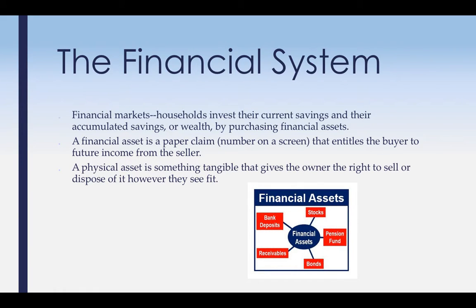A physical asset is something tangible that gives the owner the right to sell or dispose of it as they see fit. I can buy a tool, a machine, a boat, a piece of art — those are physical and easily bought and sold. Financial assets, on the other hand, are not tangible. Some examples of financial assets: stocks, bonds, bank deposits, and so on.